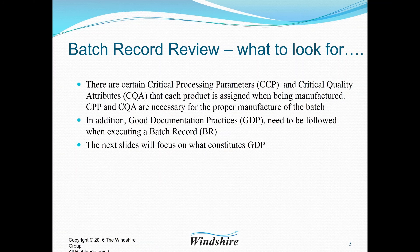So what do we look for in a batch record review? There are certain things called critical processing parameters and critical quality attributes. Their initials are CPP and CQA. They are assigned as each product is being manufactured, researched, or developed. They are things that are necessary for the proper manufacture of the batch.